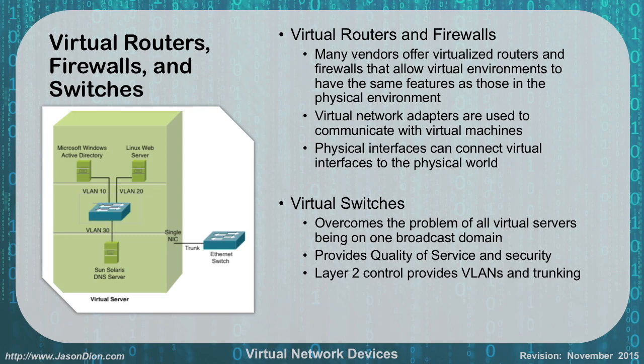As you can see here, I have the same three machines that I virtualized before: a DNS server, a web server, and an Active Directory server. I have a virtual switch, and each of those is being placed on its own VLAN — VLAN 10, 20, and 30 — using a virtualized switch that's acting as a multi-layer switch. This virtual switch overcomes the problem of having all these virtual servers on the same broadcast domain, because I'm using a layer 3 virtual switch.